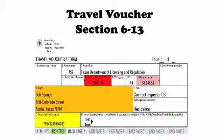I want to mention number nine — it is not colored in, but the amount here is what the inspector will be reimbursed. This amount automatically fills in once you enter the rest of your numbers in the travel voucher, so you will know exactly what you are getting reimbursed.